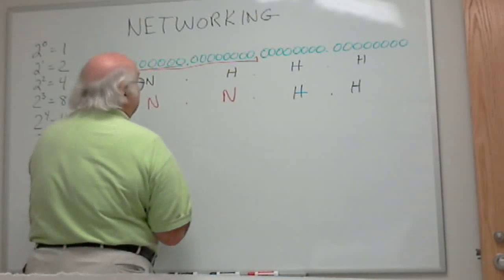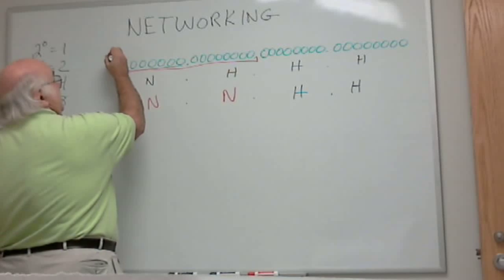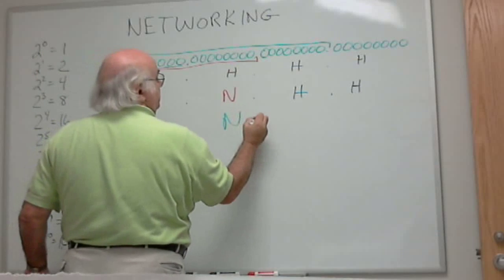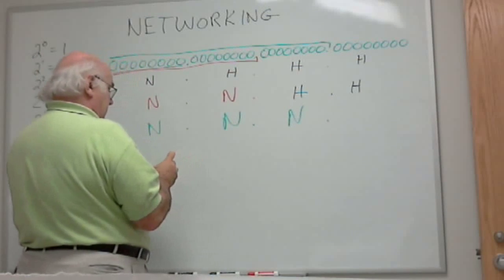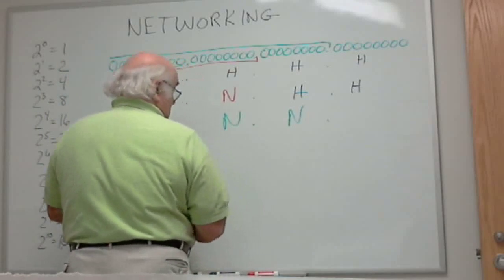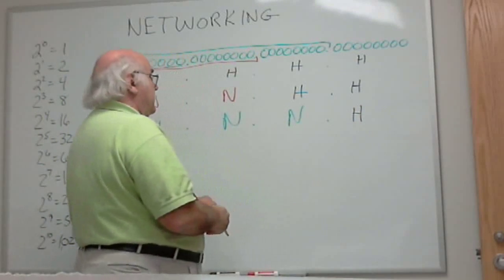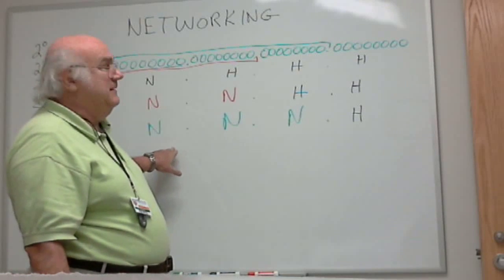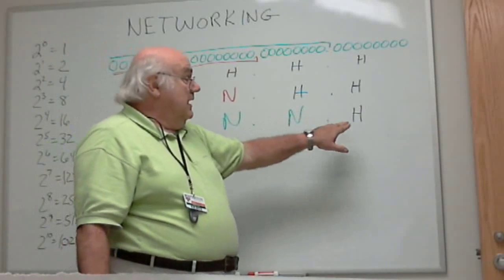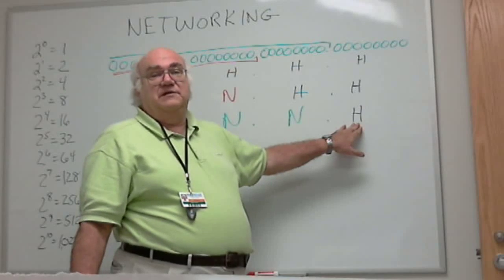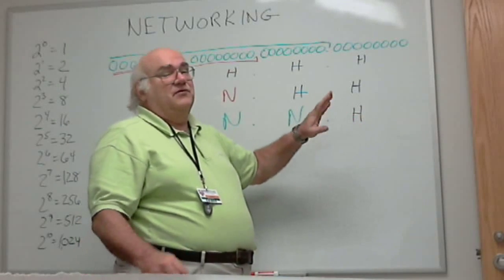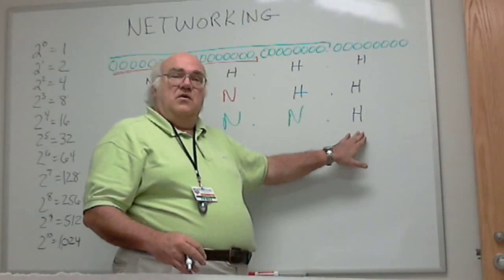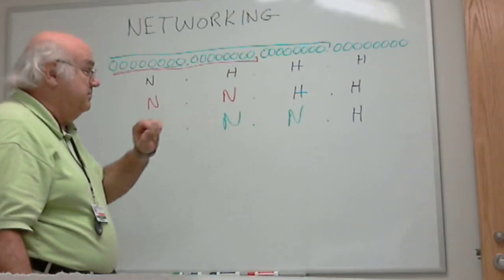The third classful case I had was where the first three bytes were network and the last byte being the host. So now I had 24 bits for a network address, about 16 million different network addresses I could get. But each one of them can only have 256 hosts. Now that's a rounded number. We're going to get into the finer points of this as we go on. But right now, just think of that as 256, because there's eight bits.